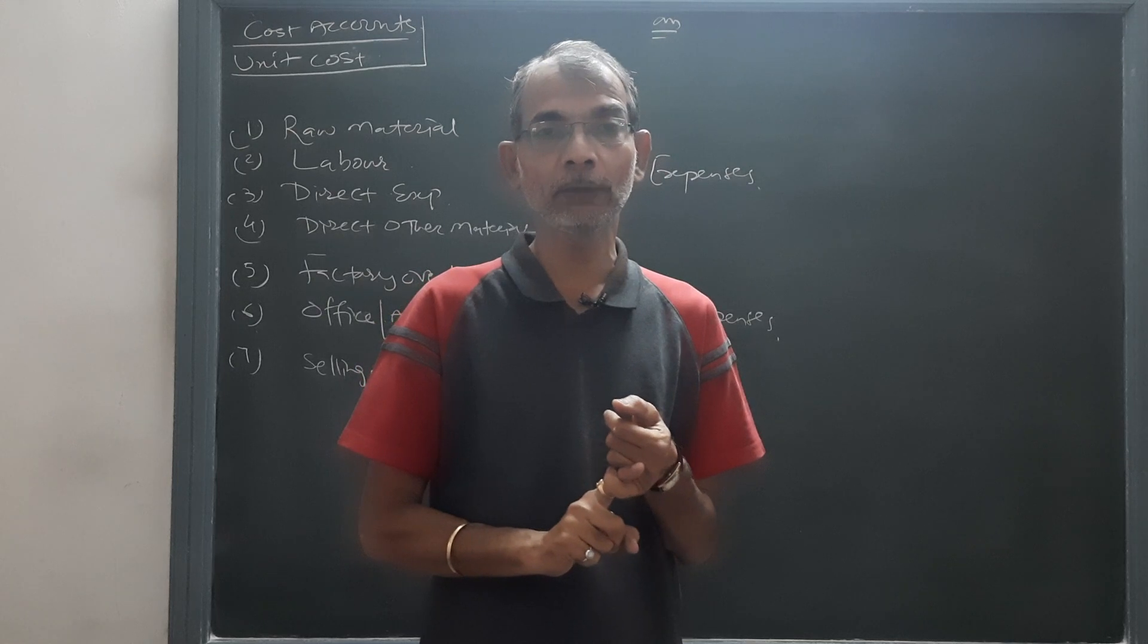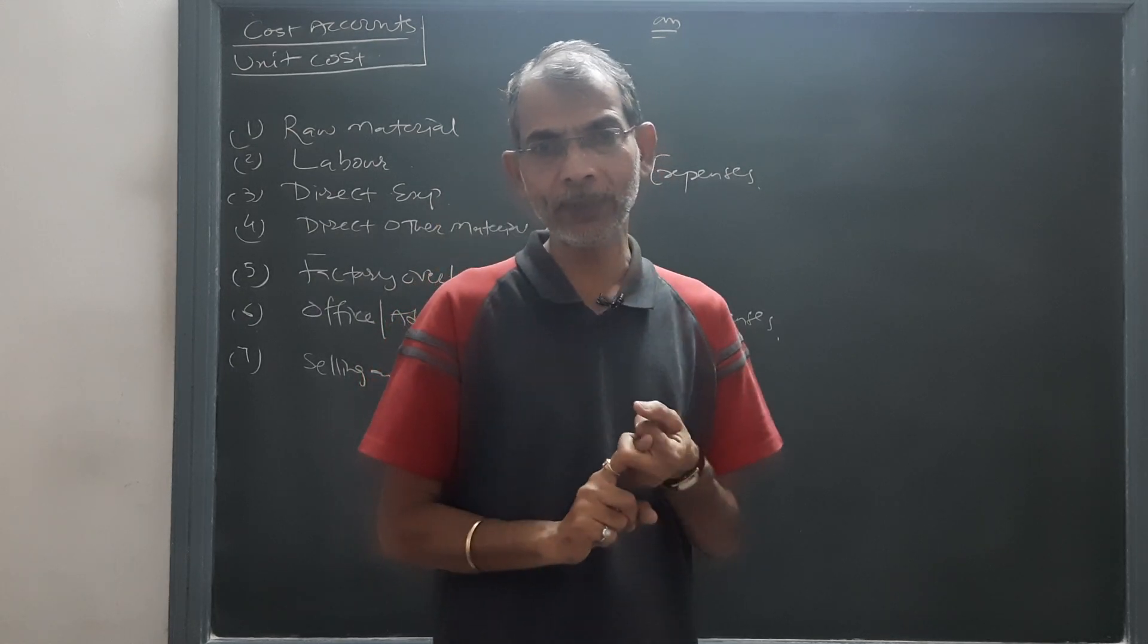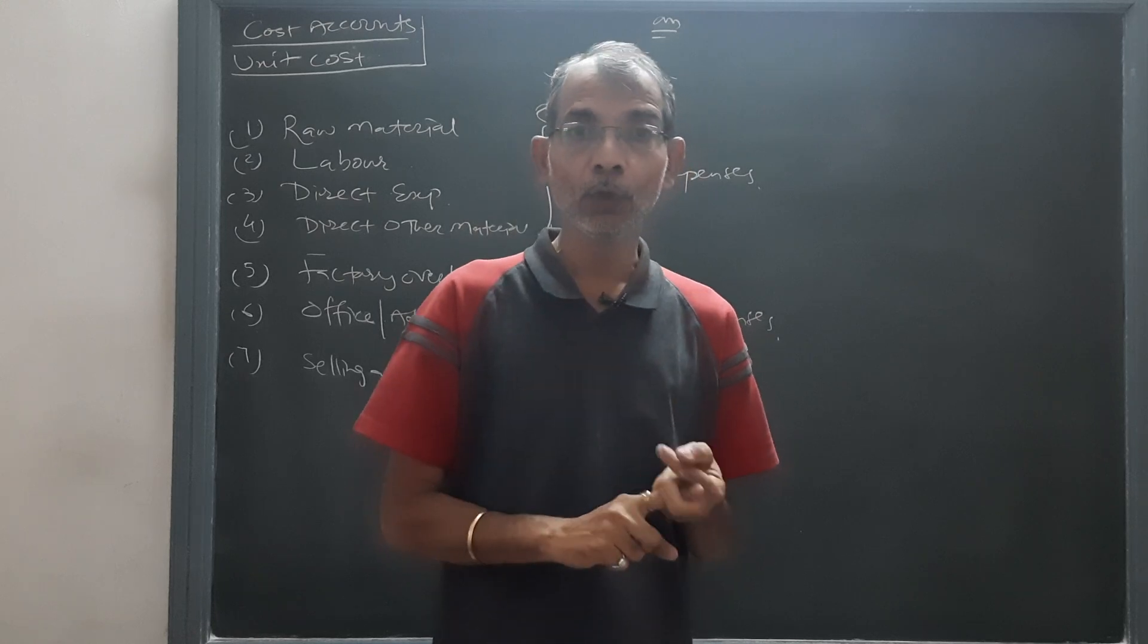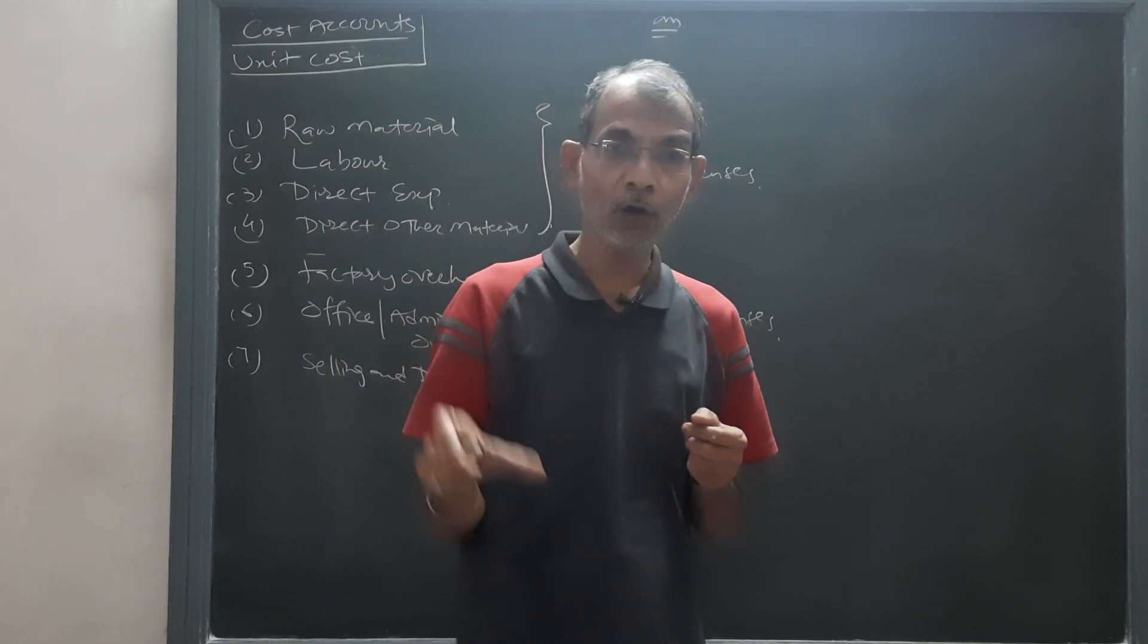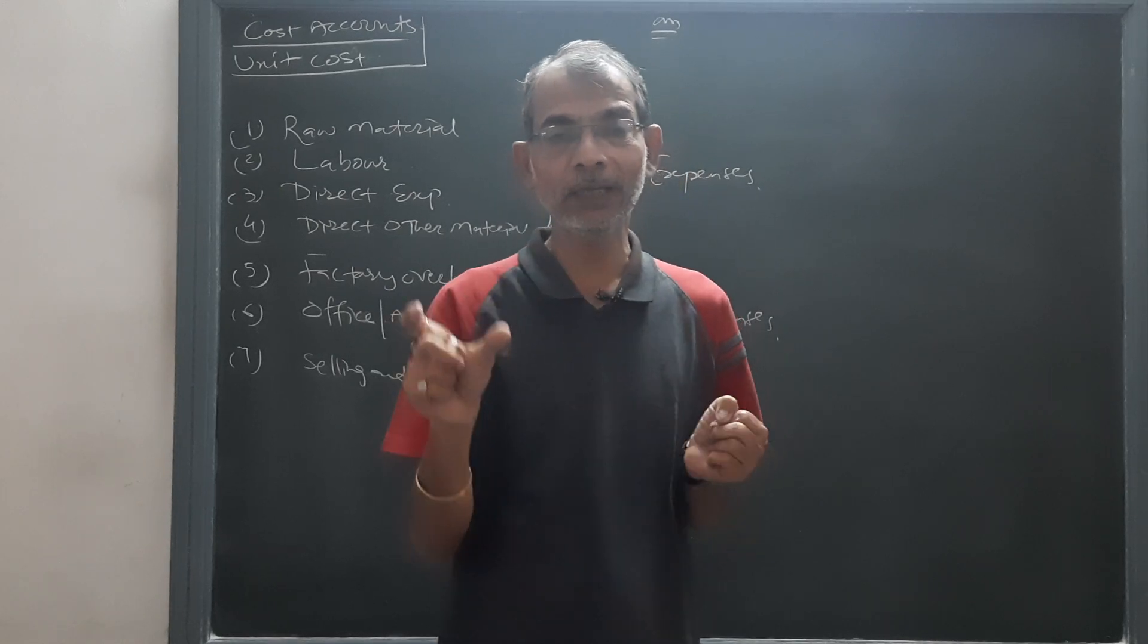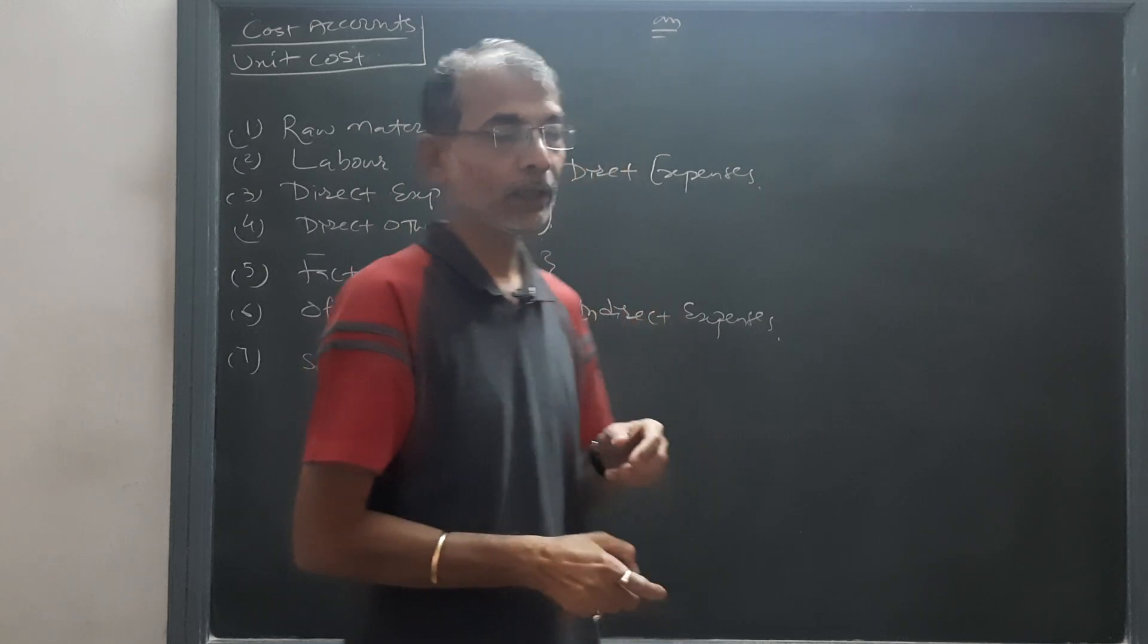Suppose advertisement expenses being done monthly, so whole expense will be divided for the lots or to the lots which are being manufactured at the unit for whole month. In this way, these are the seven expenses which are related to the production of any units.